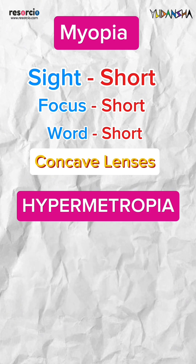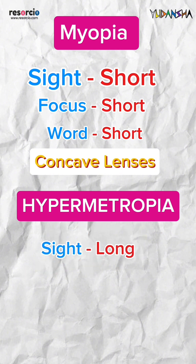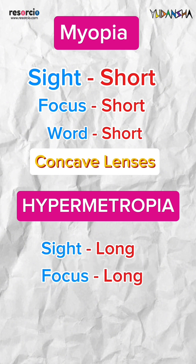Hypermetropia means long sight. Hypermetropia is also called long sight because people can see distant objects clearly, but nearby ones appear blurry.